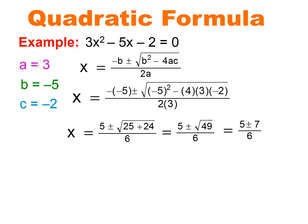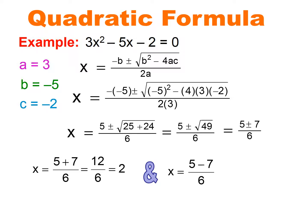I end up getting 5 plus or minus 7 all over 6. You can't leave your answer like this — you actually have to simplify. It's easier to write it as two separate equations: 5 plus 7 over 6, and 5 minus 7 over 6. So 5 plus 7 is 12, and 12 over 6 divides to 2. And 5 minus 7 is negative 2, and negative 2 over 6 reduces to negative 1 third. So my solutions are x equals 2 and x equals negative 1 third.